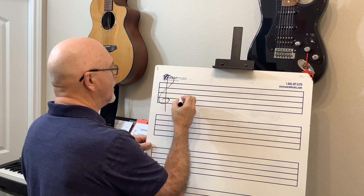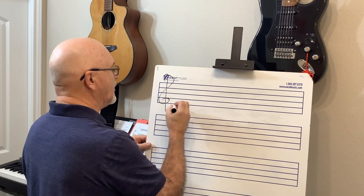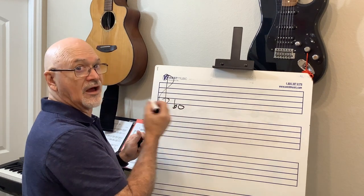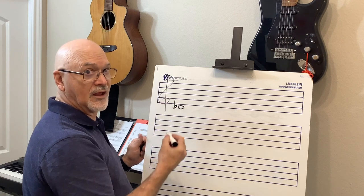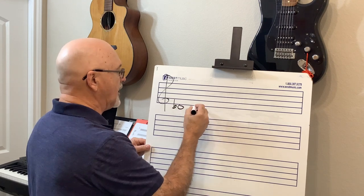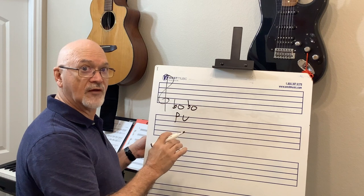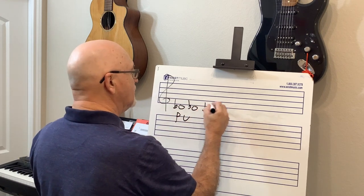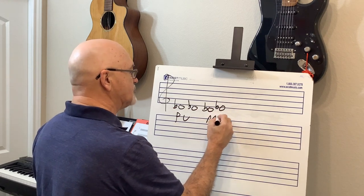Let's look at D-flat. The key of D-flat is five flats: B-flat, E-flat, A-flat, D-flat, G-flat. So D-flat to D-flat would be a perfect unison — it's the same pitch. But D-flat to E-flat is a major second interval, and a major second is two half steps.